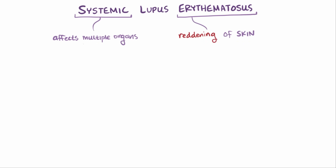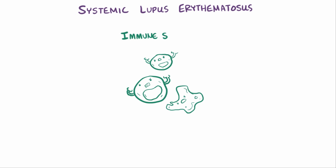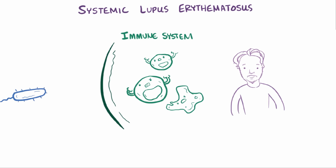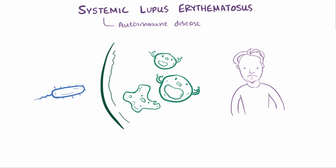Systemic lupus erythematosus, or SLE — sometimes just called lupus — is a disease that is systemic and affects a wide variety of organs, but notably often causes red lesions on the skin. Lupus is an autoimmune disease, meaning immune cells start attacking the tissues they're supposed to protect. Essentially any tissue or organ can be targeted.